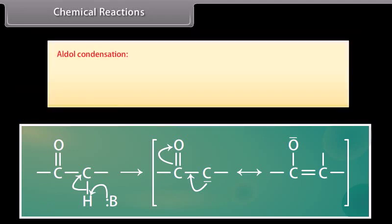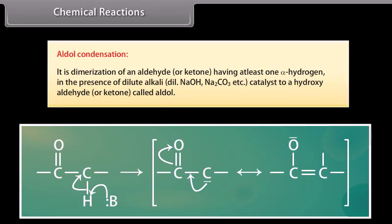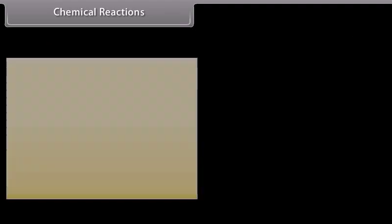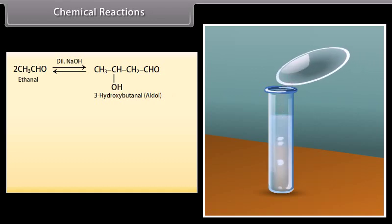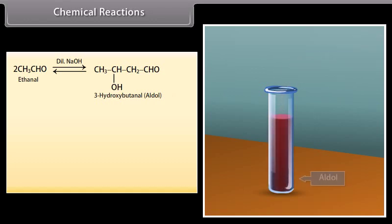Aldol condensation: it is the dimerization of an aldehyde or ketone having at least one alpha hydrogen in the presence of dilute alkali such as dilute sodium hydroxide or sodium carbonate as catalyst, to form a hydroxyaldehyde or ketone called aldol. Ethanal in the presence of dilute sodium hydroxide undergoes condensation to form a syrupy liquid known as aldol.